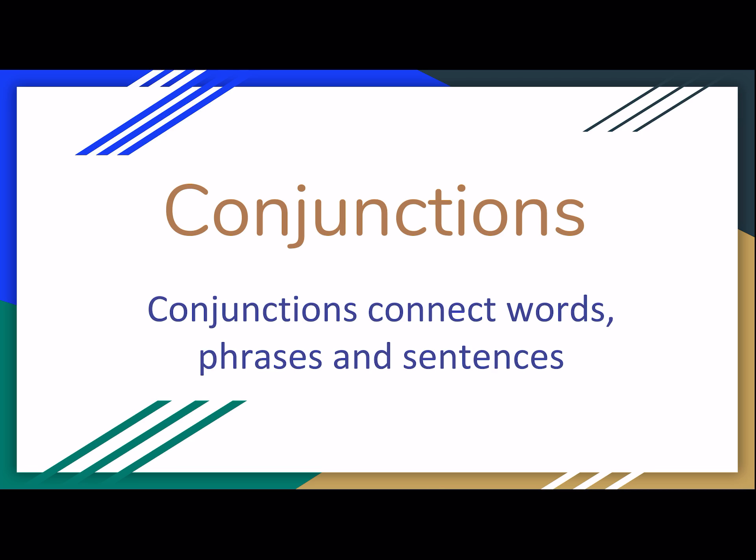Let's try to do this one together. We have two sentences: "My brother plays violin." And we also have "My brother sings." So how can we combine these two sentences? We have to make sure it says the same thing, and we can use the word "and." How can we combine these two sentences to make one sentence?